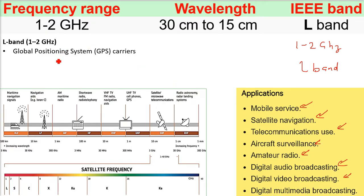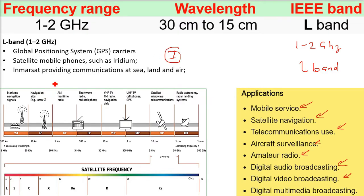Apart from this, the global positioning system carrier, GPS carriers, they also use this frequency. The satellite mobile phones, you might have heard about iridium, the Inmarsat providing communication at sea, land and air. This is L band 1 to 2 gigahertz, 30 centimeter to 15 centimeter wavelength. World space satellite radio also, 1 to 2 gigahertz.